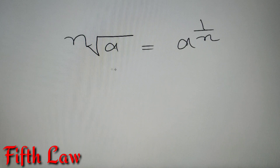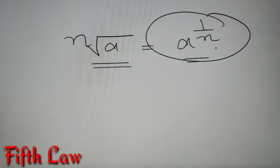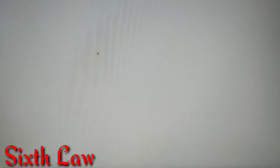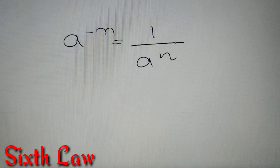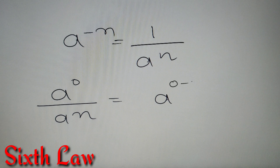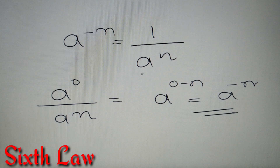The fifth law states that if we take the nth root of a number A, the result is A raised to power 1 by N. Moving on to the sixth law: if we have A raised to power minus N, it can be represented as 1 by A raised to power N. We can prove this because 1 equals A to the power 0, and A to the power 0 divided by A to the power N equals A to the power 0 minus N, which is A to the power minus N.